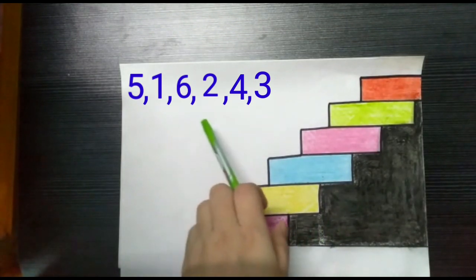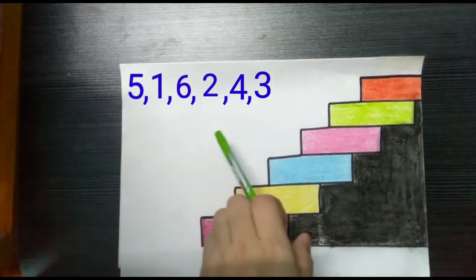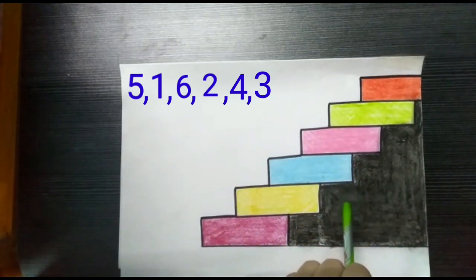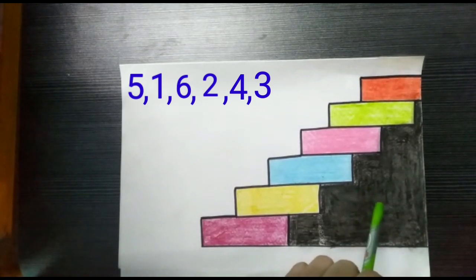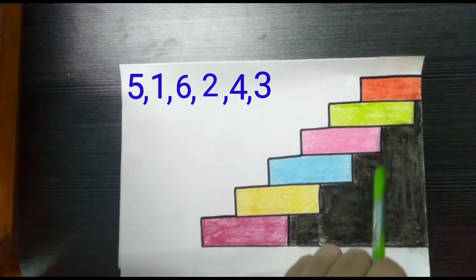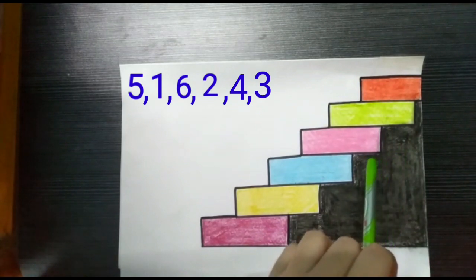Now, children, here are 6 numbers which are jumbled up. These numbers are 5, 1, 6, 2, 4 and 3. Can you help me put them in descending order by labeling the steps correctly?